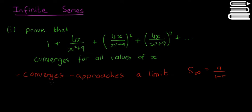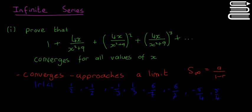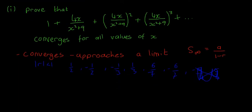This formula applies only when a series converges. The specific rule for convergence is that the absolute value of r must be less than one. For example, r could be 1/2 or -1/2, -1/3 or 1/3, 6/7 or -6/7 — all fine. But r cannot be -5/4 or 5/4, because those are greater than one.